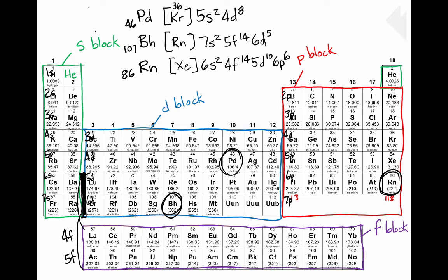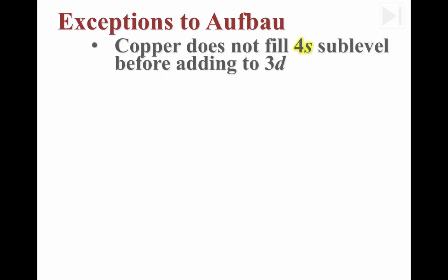Aren't these so much easier now that we have a labeled periodic table and know we can abbreviate using the last noble gas? For the last topic, I need to let you know that there are some exceptions. We've learned the rules, and you'll mostly be able to apply them, but occasionally you'll see elements that don't follow the rules.